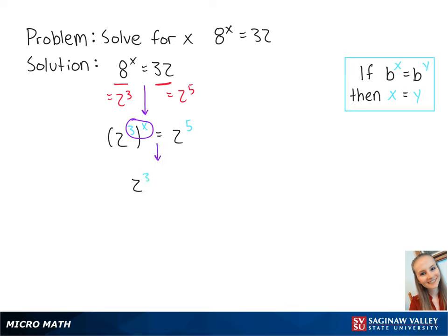we get 2 to the 3x equals 2 to the fifth power. Since 3x and 5 now share the same base of 2, this equals 3x equals 5.